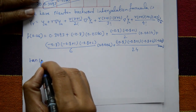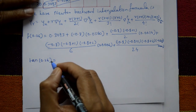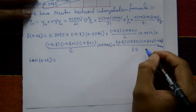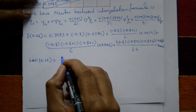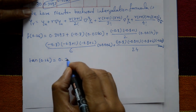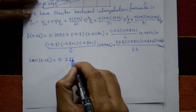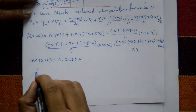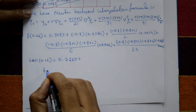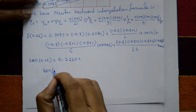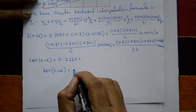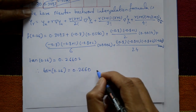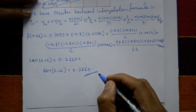Using a calculator to simplify all terms, we get tan(0.26) = 0.26602. Considering only four decimal digits, tan(0.26) = 0.2660. This is the required solution.